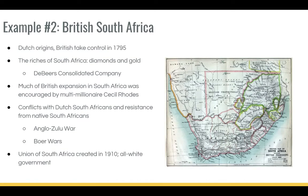A second example is British South Africa. It was originally colonized by the Dutch — white Europeans — in what was called the Cape Colony around the Cape of Good Hope. But the British took control in 1795 once Napoleon had invaded the Netherlands. They realized they needed to control this territory, in case France tried to do anything in India, and wanted a very strategic location. The British then sent settlers there and found that South Africa had quite a lot of riches, especially when they discovered diamond mines in the region — where the De Beers Consolidated Company developed a monopoly over diamonds.